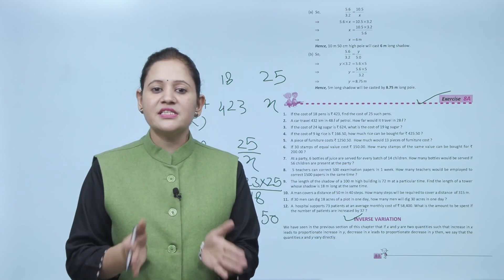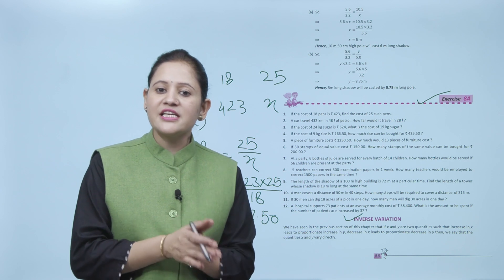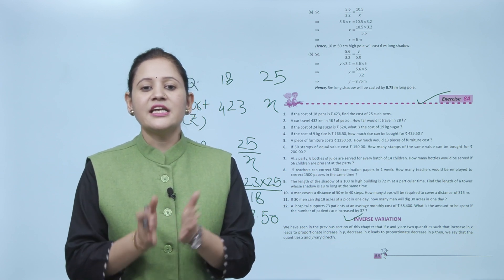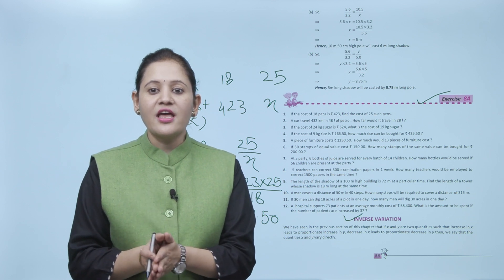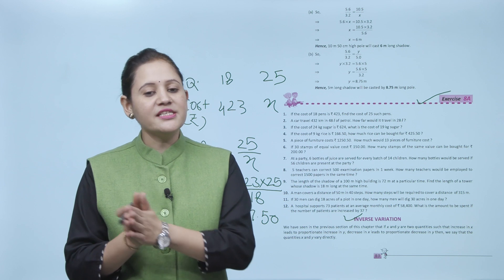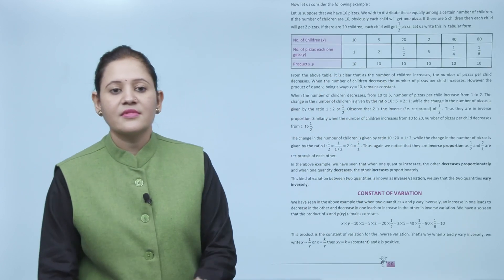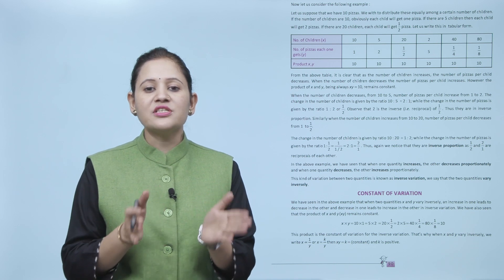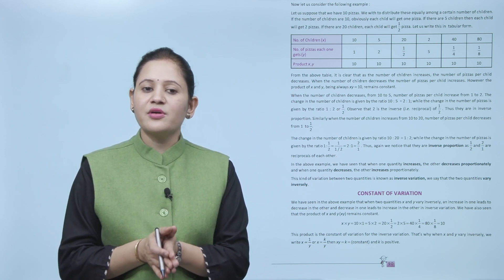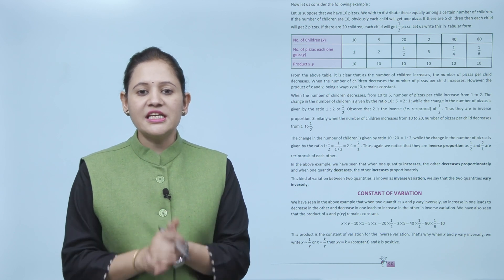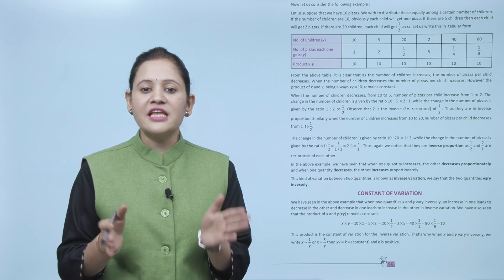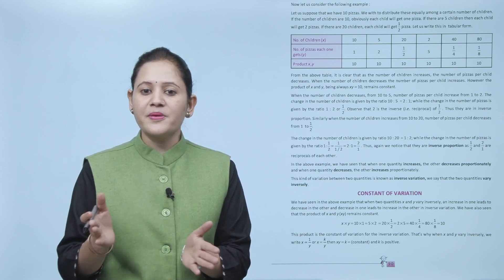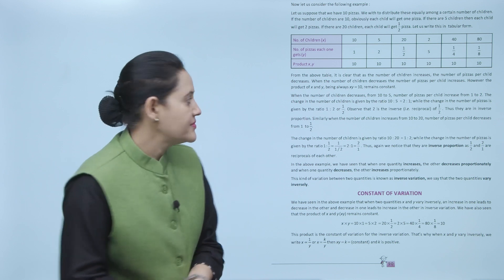Next is inverse variation. We have seen that if x and y are two quantities such that an increase in x leads to a proportionate increase in y, they vary directly. Now consider a different situation: suppose we have 10 pizzas to distribute equally among children. If there are 10 children, each gets 1 pizza; if 5 children, each gets 2 pizzas; if 20 children, each gets half a pizza.